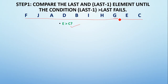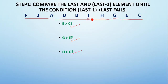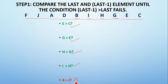So I move on to the next element, G, and check whether G is greater than E. The condition is true again, so I move on to H. I check whether H is greater than G — true again. I go on to I and check whether I is greater than H — true again. Now I move on to the next element, B. The condition fails since B is not greater than I. Once the condition fails, I stop Step 1 and move on to Step 2.